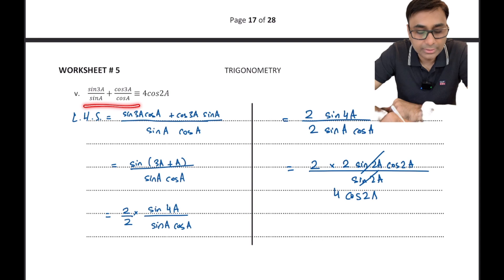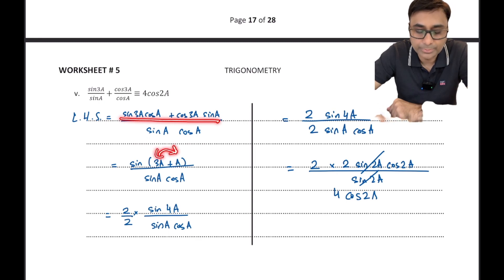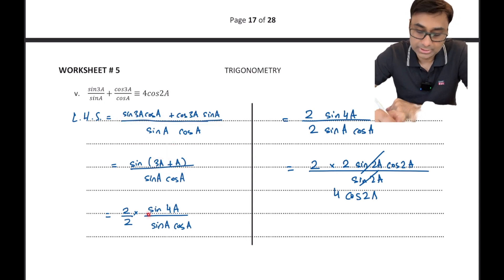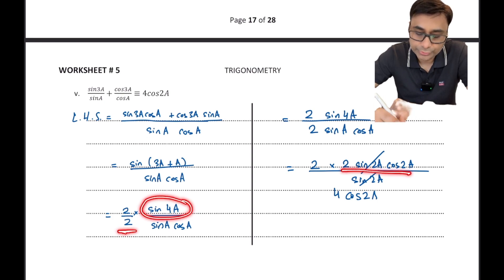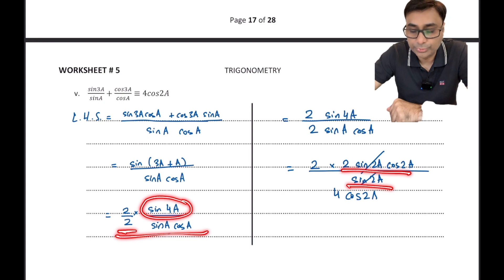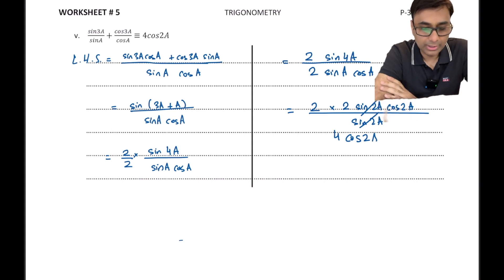Final example: sin 3a/sin a - cos 3a/cos a. Taking LCM gives (sin 3a cos a - cos 3a sin a) / (sin a cos a). The numerator is sin(3a - a) = sin 4a using the compound angle formula. For the denominator, introduce a 2 so that 2 sin a cos a = sin 2a. Then sin 4a = 2 sin 2a cos 2a, one sin 2a cancels, and we are left with 2 × 2 × cos 2a = 4 cos 2a.